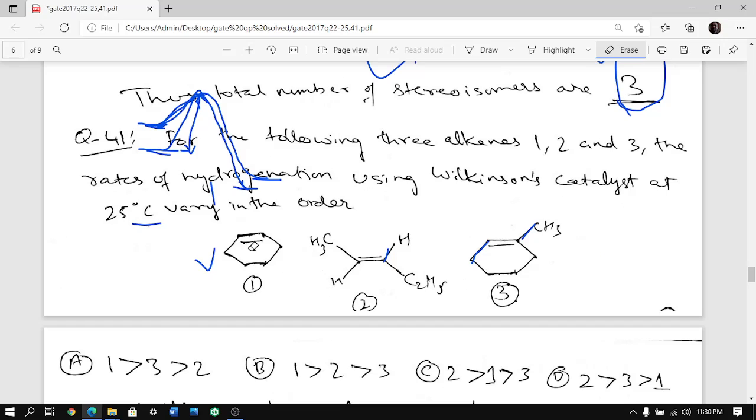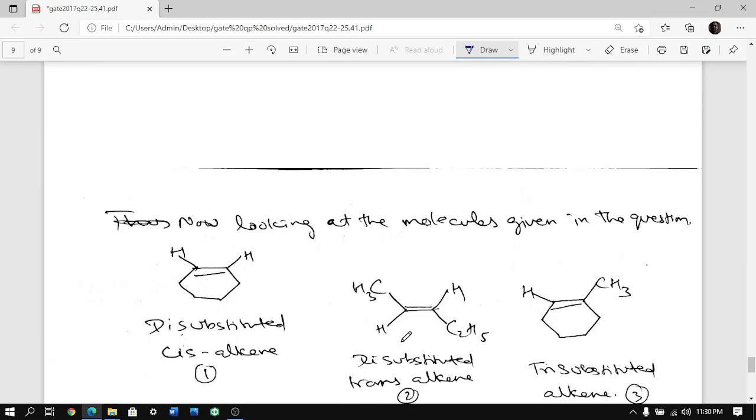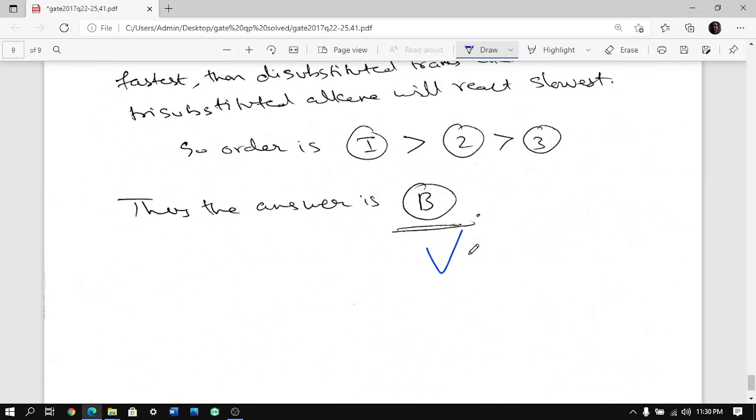Therefore trans undergoes reduction slower than cis. So it is very clear now. Reaction fastest will be cis. So 1 will be fastest, faster than 2 than 3. So 1, 2 and 3. So the answer should be B. So that is it for today.